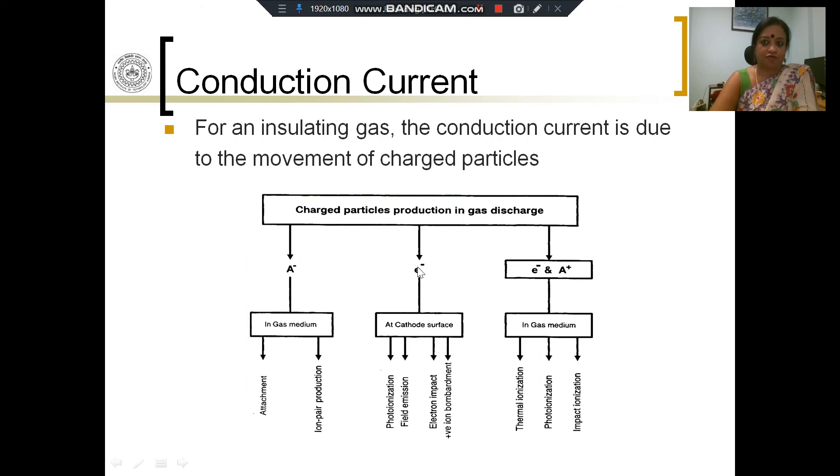When talking about charged particles, I am going to discuss three predominant kinds which contribute to current density: electrons, the lightest particle available; negative ions; and a combination of electrons plus negative ions. Electrons are primarily produced at the cathode surface through processes like photoionization, field emission, electron impact, and positive ion bombardment.